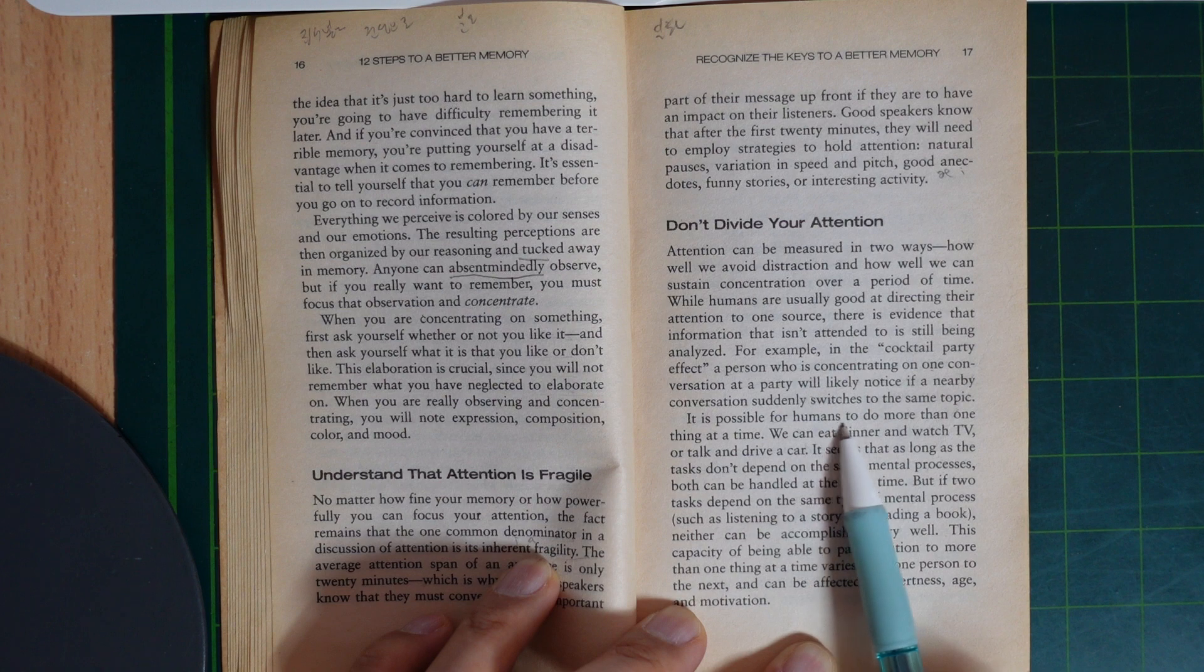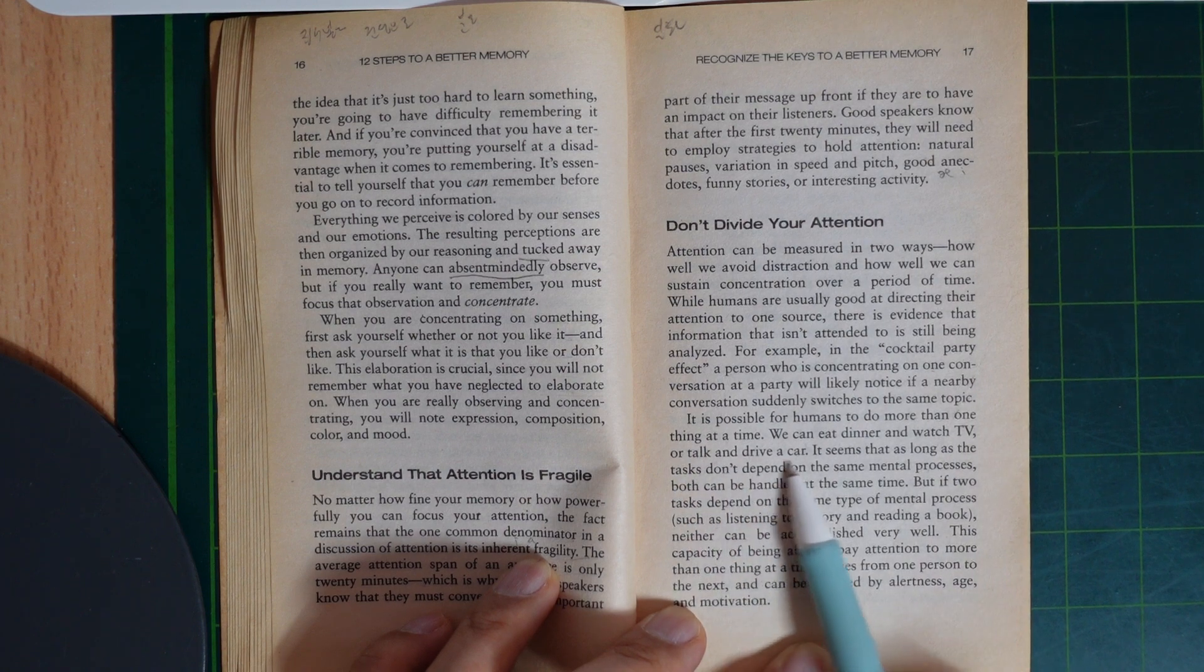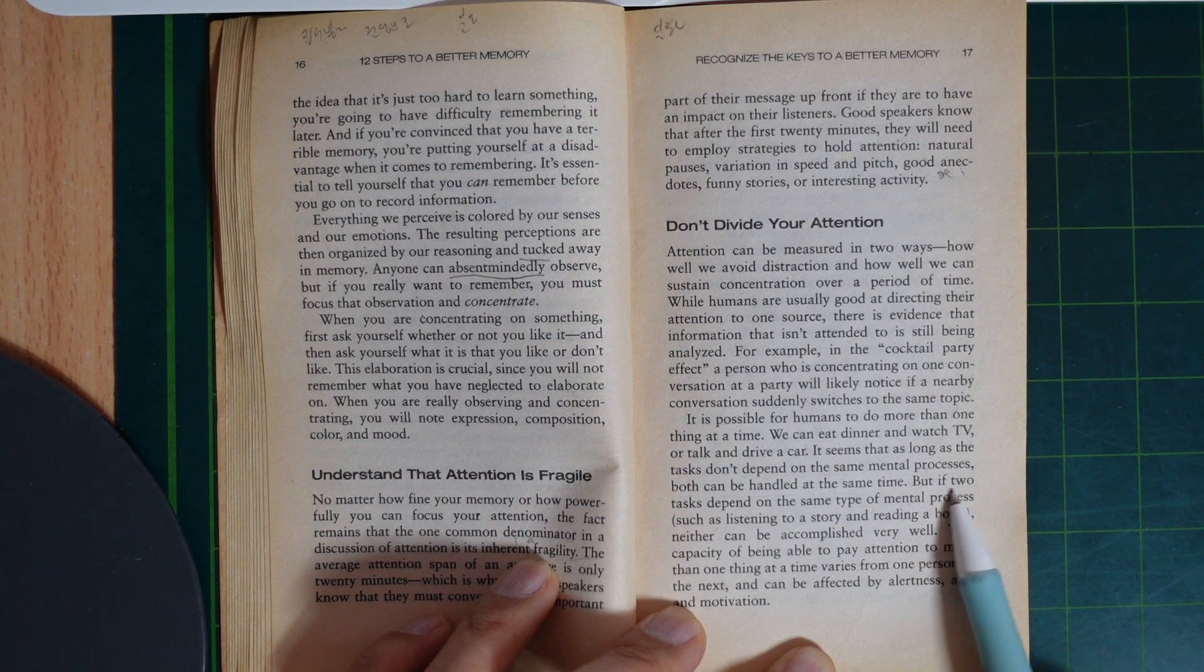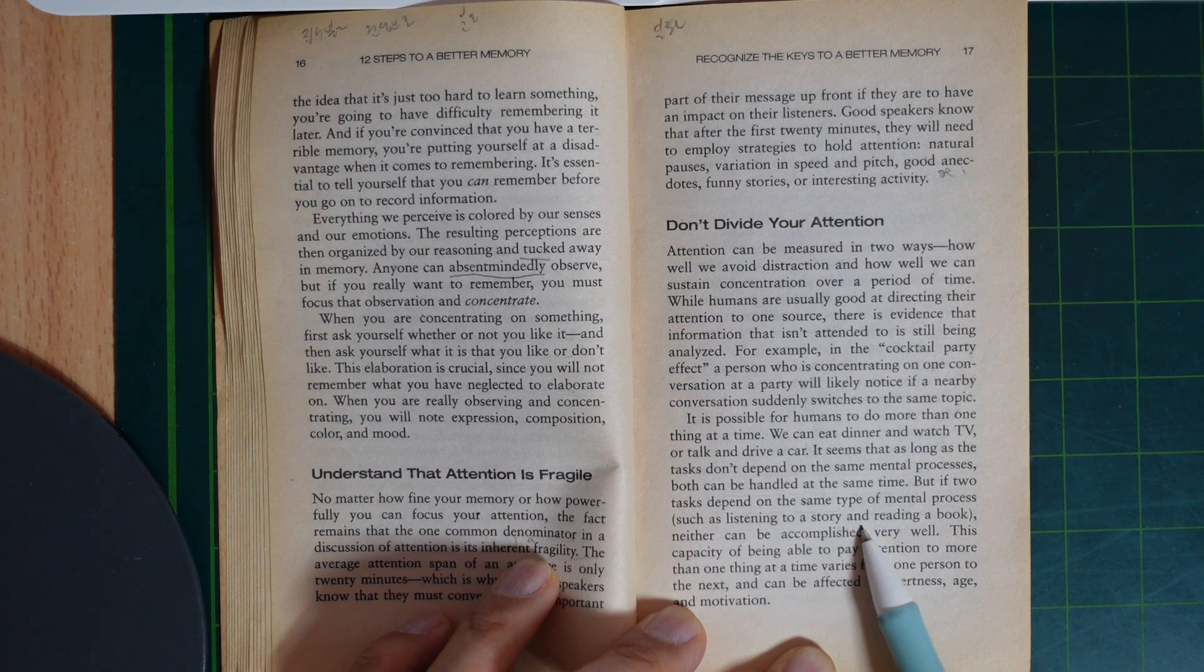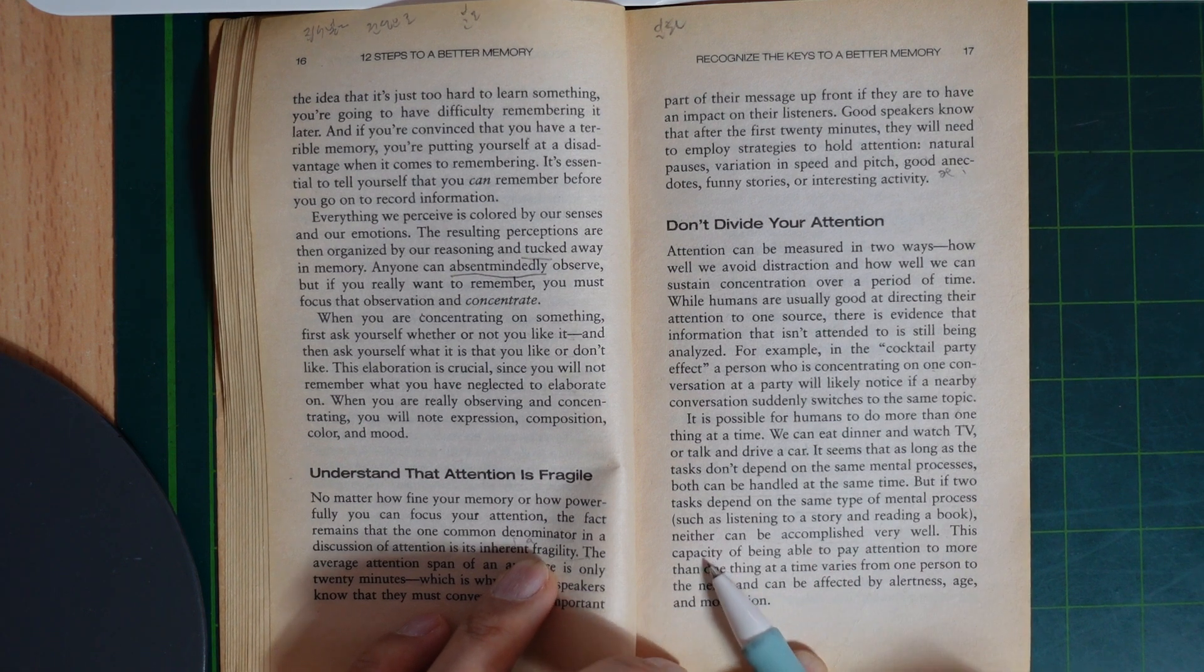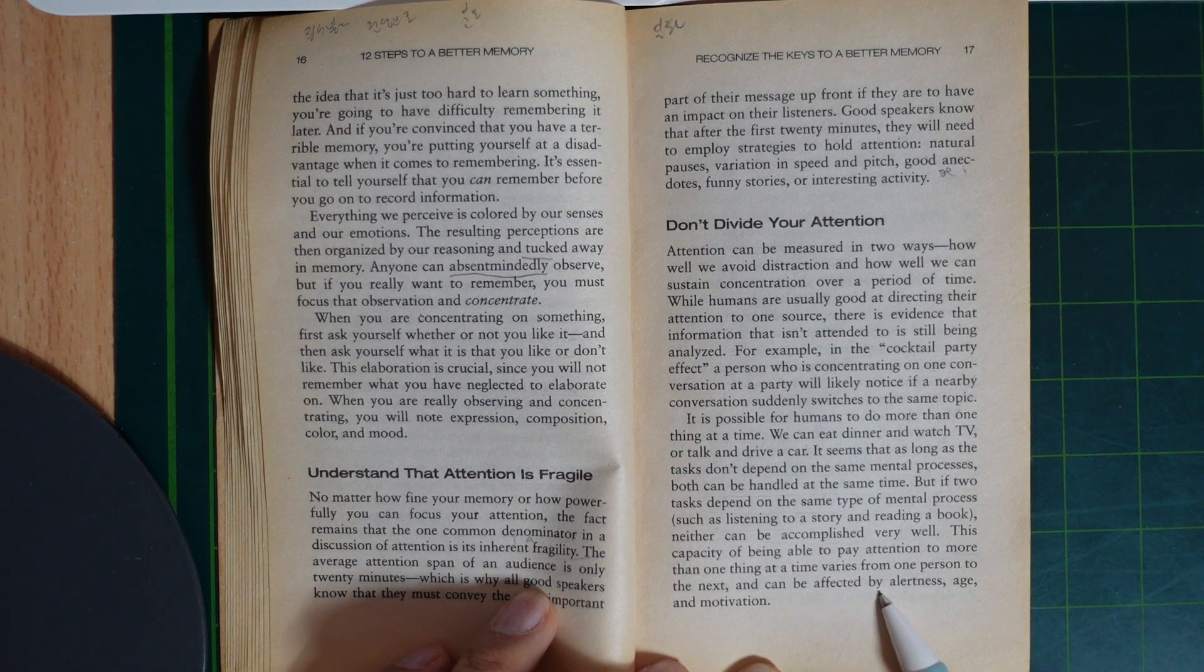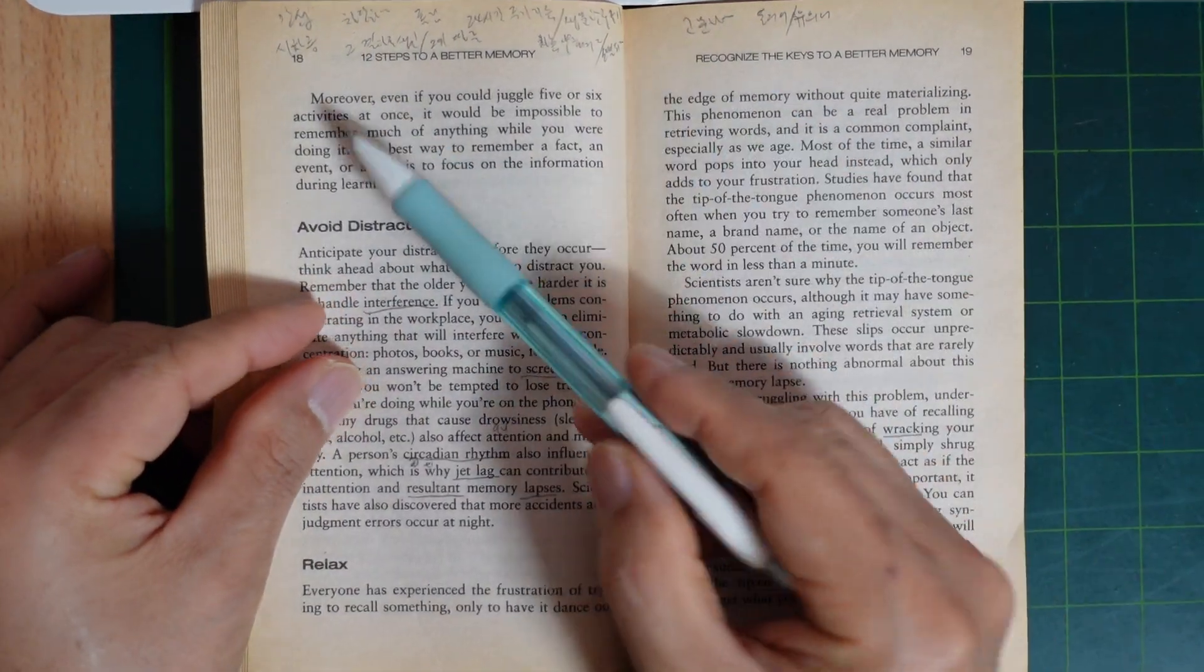It is possible for humans to do more than one thing at a time. You can eat dinner and watch TV and talk and drive a car. It seems that as long as the tasks don't depend on the same mental processes, both can be handled at the same time. But if two tasks depend on the same type of mental process, such as listening to a story and reading a book, neither can be accomplished very well. This capacity of being able to pay attention to more than one thing at a time varies from one person to the next and can be affected by alertness, age, and motivation.